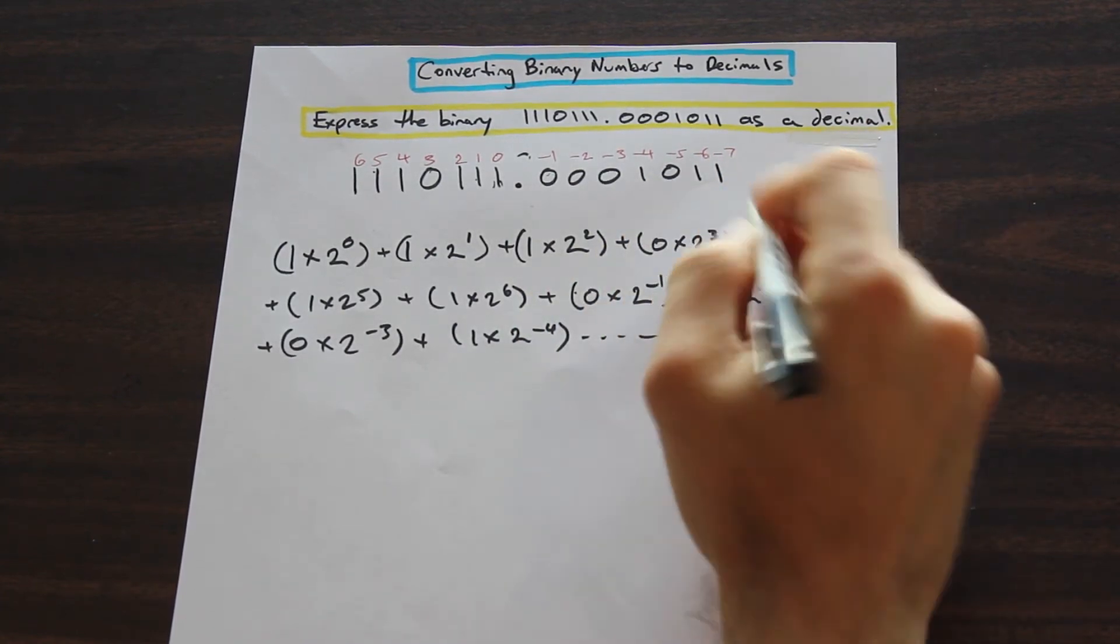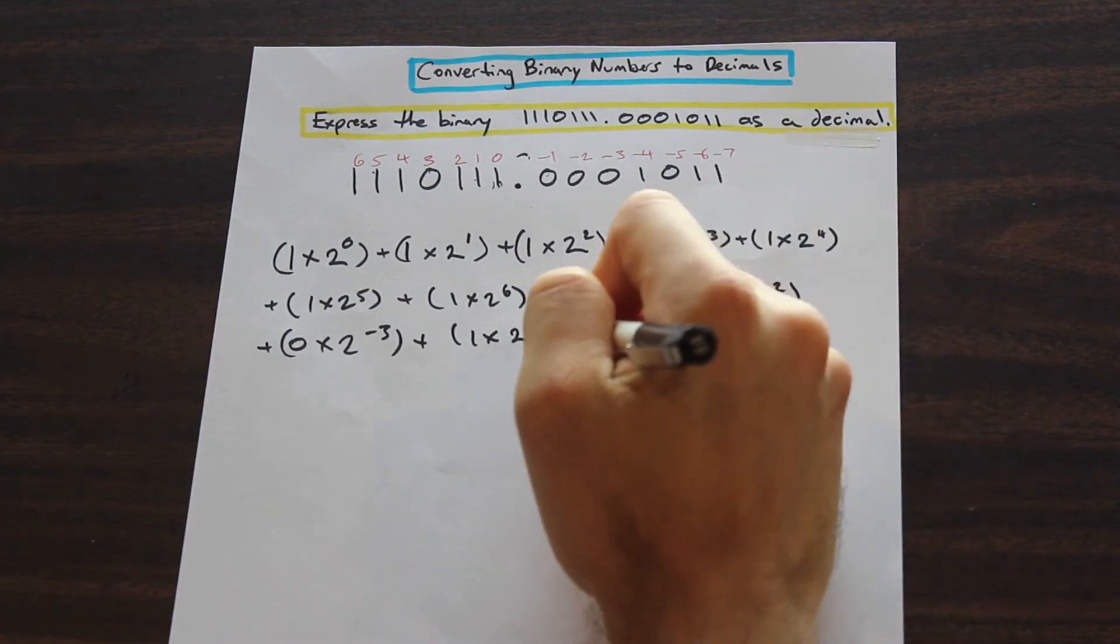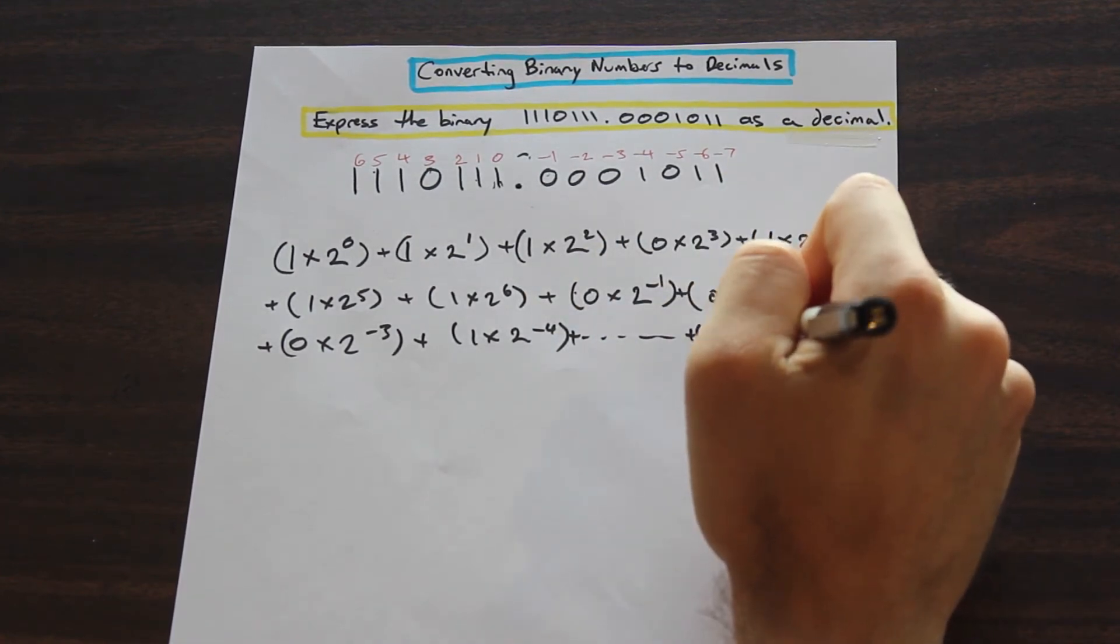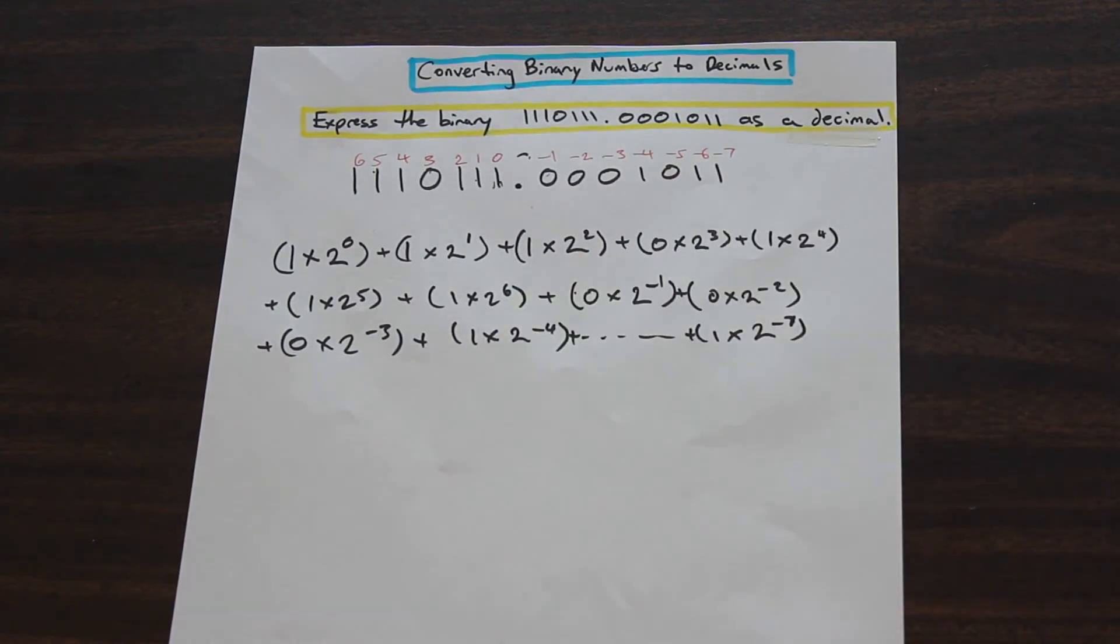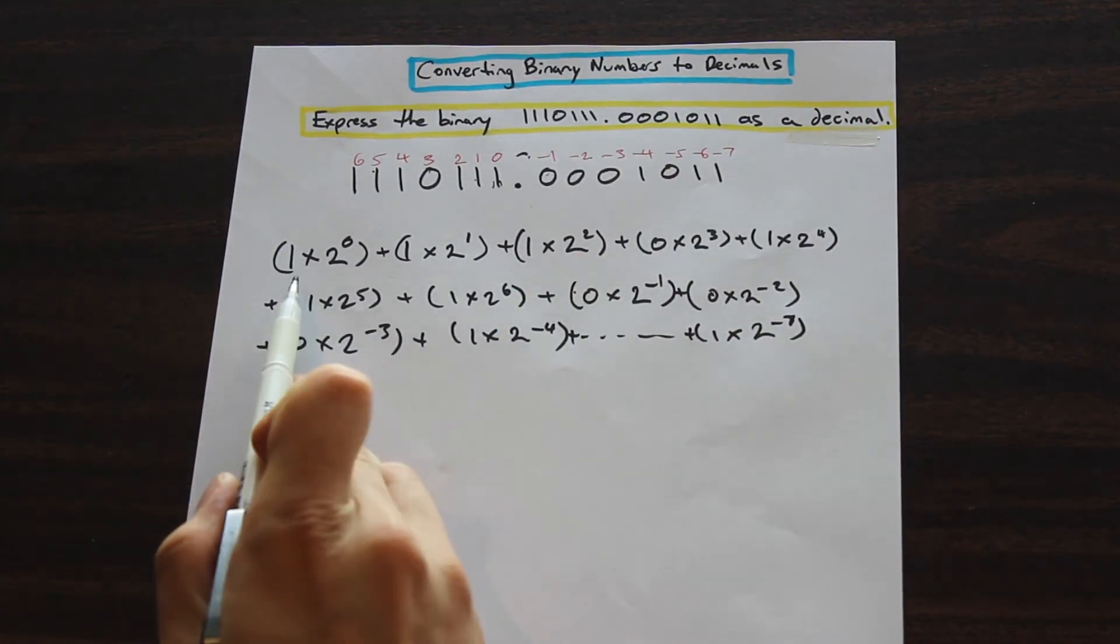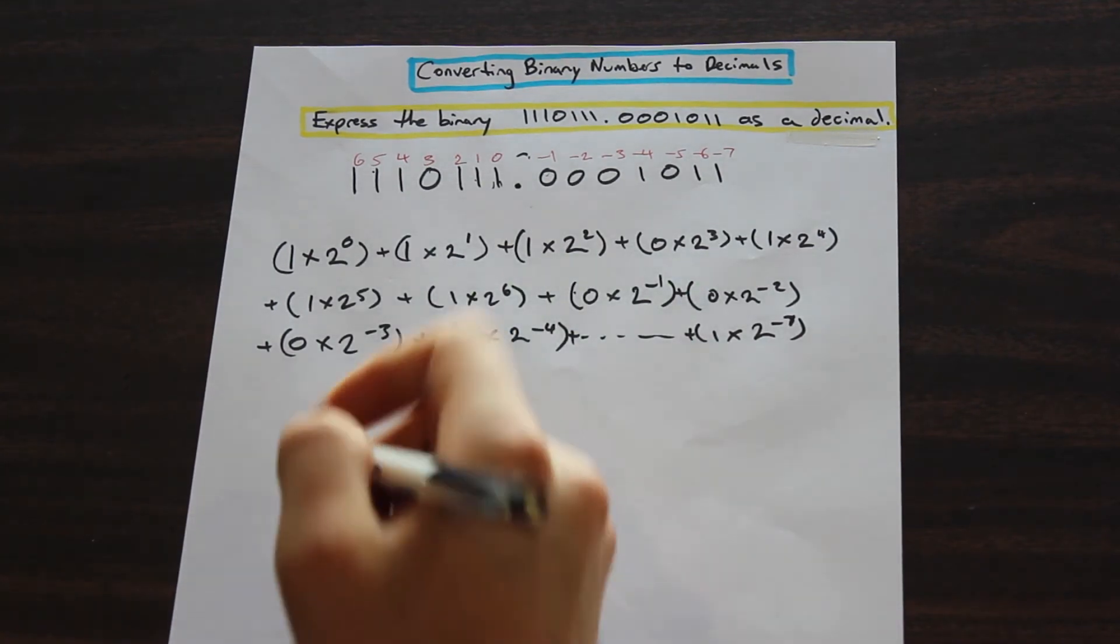And then at the end we have 1 times 2 to the power of negative 7. And if we now, you're just going to go ahead, you're going to go and add all of these together.